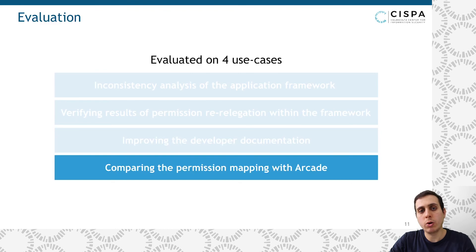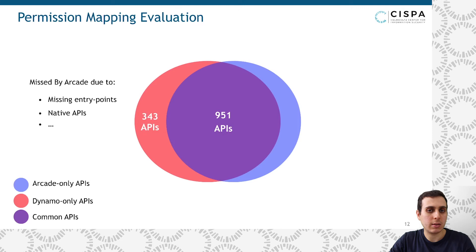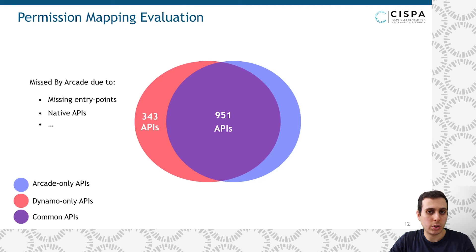Finally, we compared the permission mapping produced by Dynamo with the state-of-the-art permission mapping from Arcade for the same Android version, which was Android 6. We found 951 APIs that exist in both mappings. But to our surprise, Dynamo reported 343 APIs that were missing from Arcade. The Arcade authors partially attributed this to not including the entry points of the APIs in the analysis. However, we also found other reasons, like the most common one, which was that Arcade was not able to analyze native APIs, in addition to other technical challenges. Similarly, we found 247 APIs that are missing from Dynamo, attributable to two reasons: some APIs were not deployed on the device, and others were due to input validations that we couldn't bypass with our input generation technique.